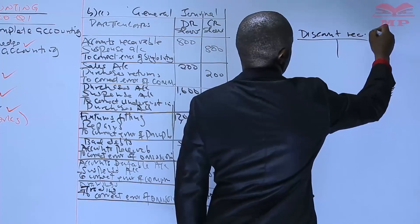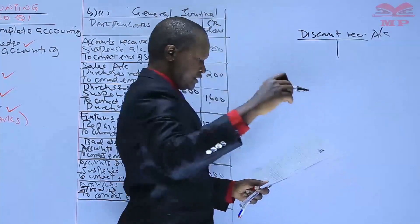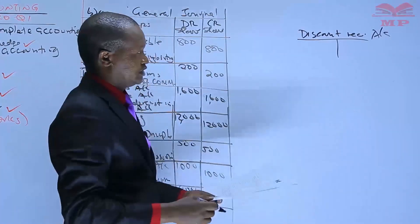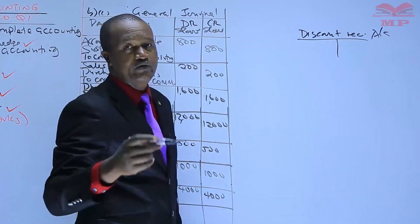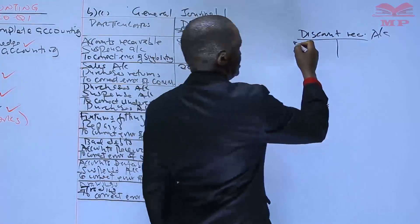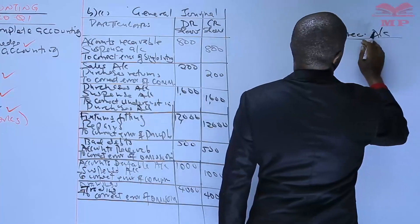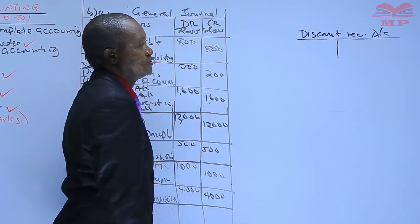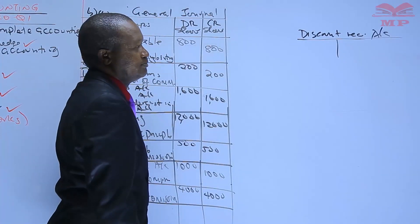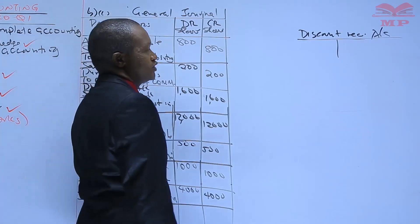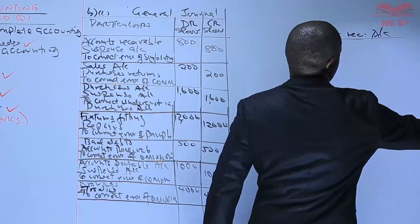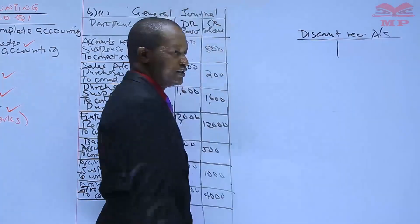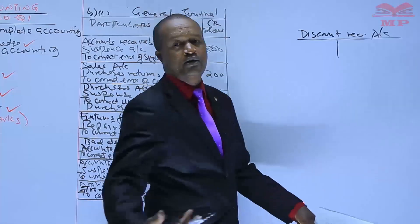The discount received account had been posted to the wrong side. Discount received is an income, and all incomes have what we call a credit balance. So when you receive an income, for example rent income, the bank account is debited and the rent income account is credited.